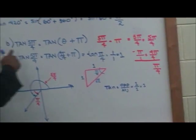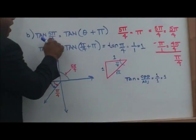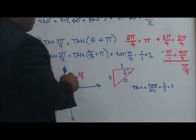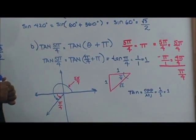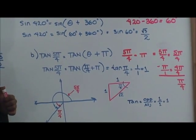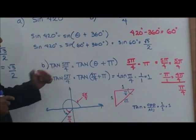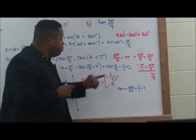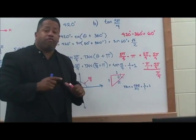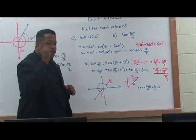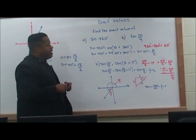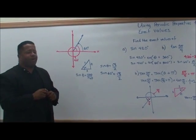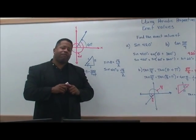So tan 5π over 4 is the same as tan π over 4. Tan 5π over 4 equals tangent π over 4, which gives you an exact value of 1. This concludes the video on using periodic properties to find the exact value.